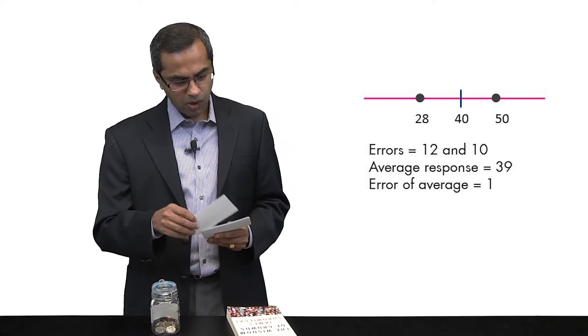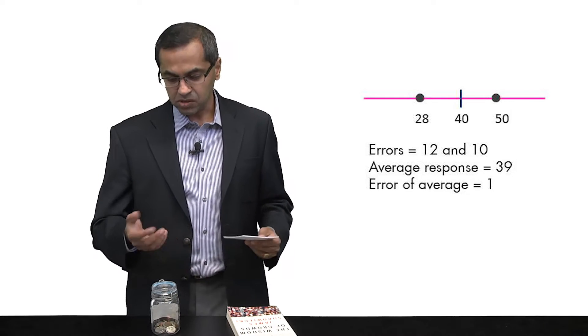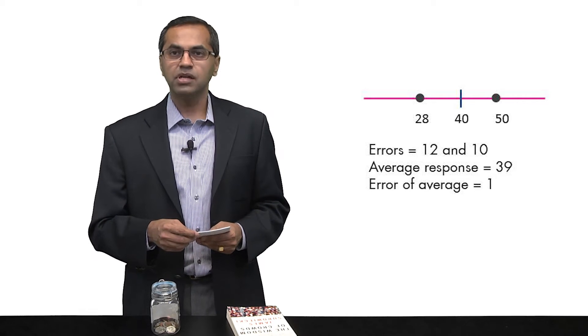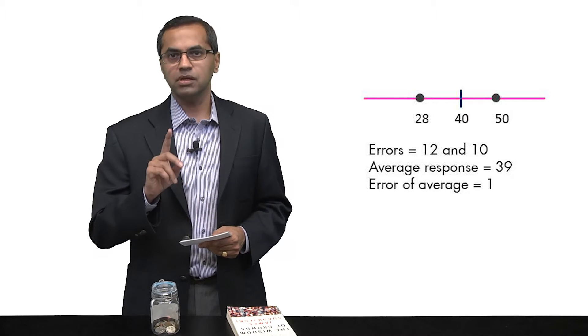Second possibility. One of the judges over-predicts, the other one under-predicts. So let's say, for example, one of them tells you that there are 50 coins in the jar. The second one tells you this looks like 28. Now what's happened is your average is 39 and the error of the average is simply 1.